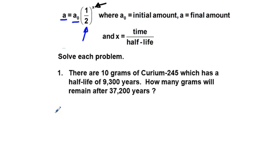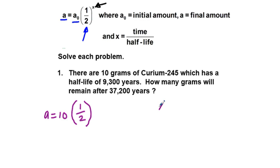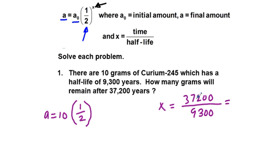Let's write out our formula. We have A, which we are trying to find, our final amount, is equal to our starting amount, which is 10 grams of curium-245, times our base of our exponent, which is one-half, to the power of x. X is equal to the time over half-life, which in this instance is going to be our time of 37,200 years over our half-life of 9,300 years. And 37,200 divided by 9,300 is 4, so we would have one-half to the power of 4.